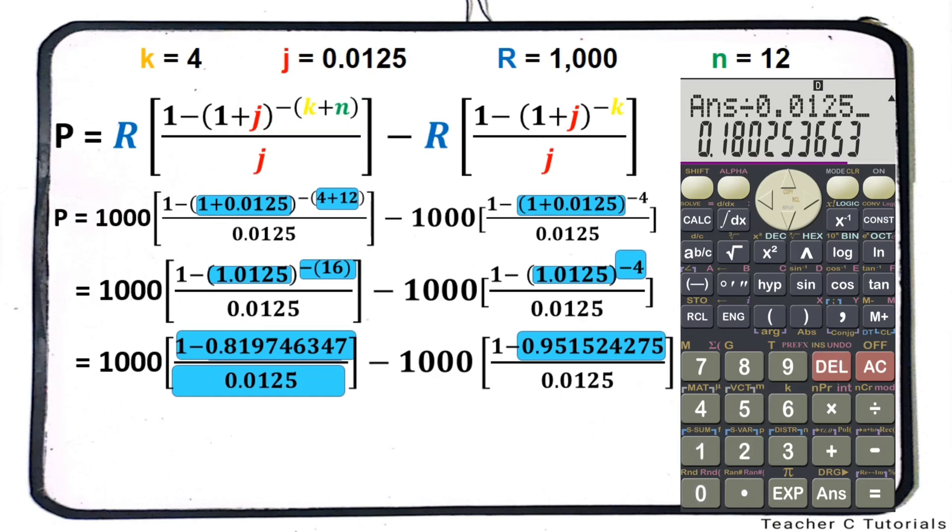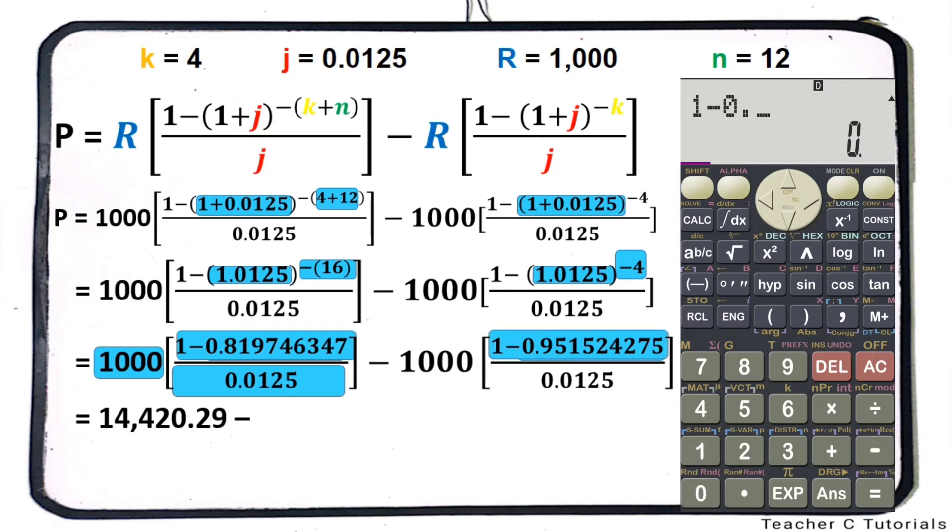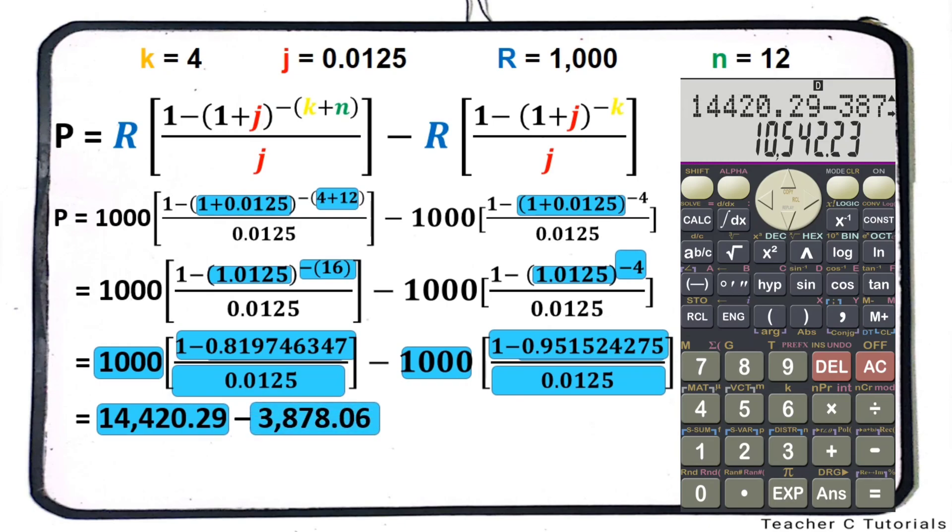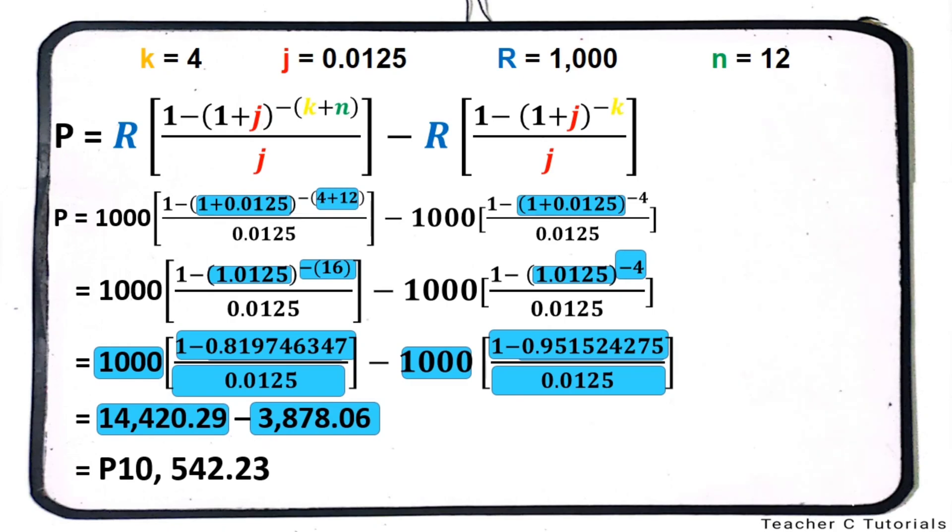Then the quantity of 1 minus 0.819746347 divided by 0.0125 times 1,000 is 14,420.29. The quantity of 1 minus 0.951524275 divided by 0.0125 times 1,000 is 3,878.06. 14,420.29 minus 3,878.06 is 10,542.23.